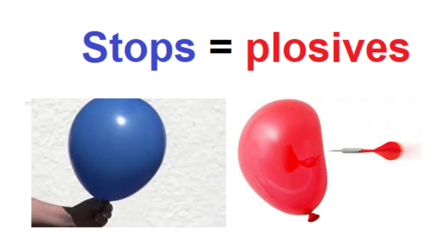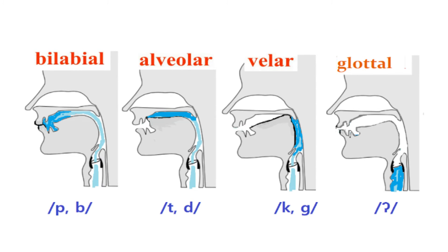They differ in where the stop happens. For the pa/ba pair, the stop happens at the lips. For the ta/da pair, the stop happens at the tooth ridge, which is also called the alveolar ridge. For the ka/ga pair, the stop happens at the velum.